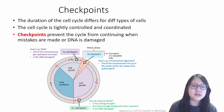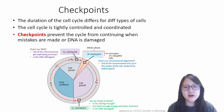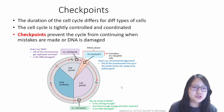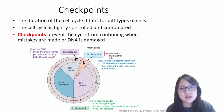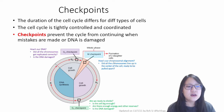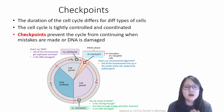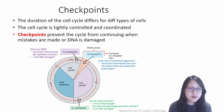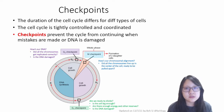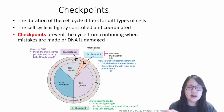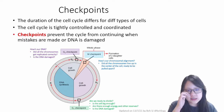In the G2 checkpoint, the cell would check whether all chromosomes are replicated properly and check for DNA damage. During mitosis, there might be another checkpoint to see whether the chromosomes line up perfectly during metaphase — did they all line up at the perfect center of the cell, the equator, ready to be pulled apart to opposite poles. So the alignment of chromosomes is checked as well.